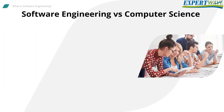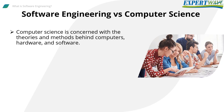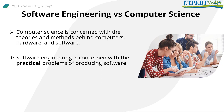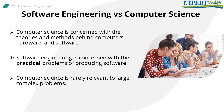Many of you may ask about the difference between software engineering and computer science. Here's my answer: computer science is concerned with the theories and methods behind computers — hardware and software. Software engineering is concerned with the practical problems of producing software. Some knowledge of computer science is essential for software engineers; however, computer science theory is often more applicable to relatively small programs and is rarely relevant to large, complex problems that require a software solution.